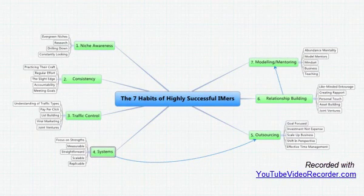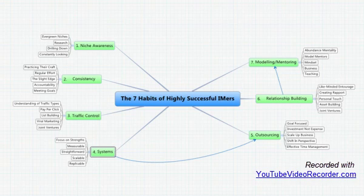Here we are at the expanded version of the 7 Habits of Highly Successful Internet Marketers Mind Map. Now, this is just an overview, remember. In each of the following videos, we're going to look at each of the habits individually, and find out why they work, and exactly how we can understand them and apply them to our own businesses.